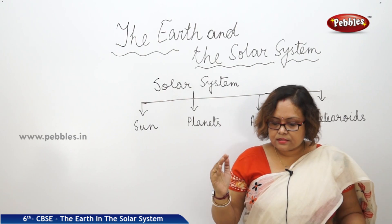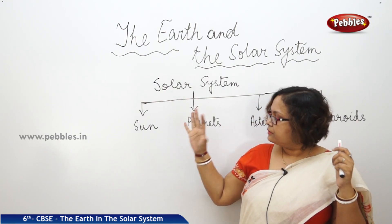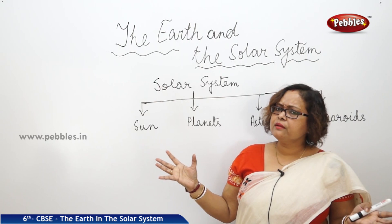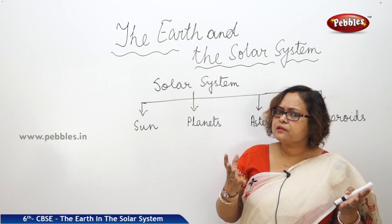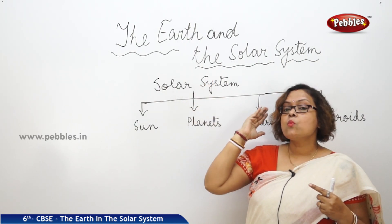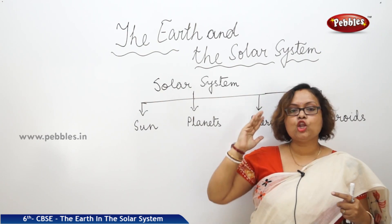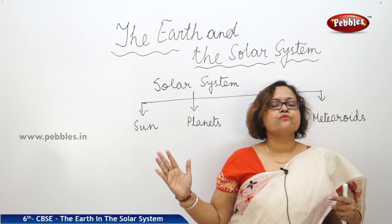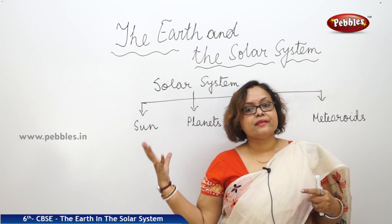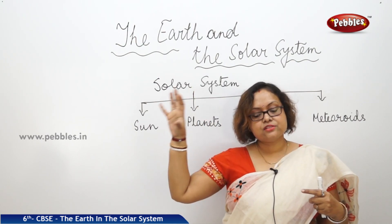Sun is a huge ball, as I told you. You can ask me why it is not looking so big — because it is 150 million kilometers away from the Earth. As a result, we can see the sun in that size.